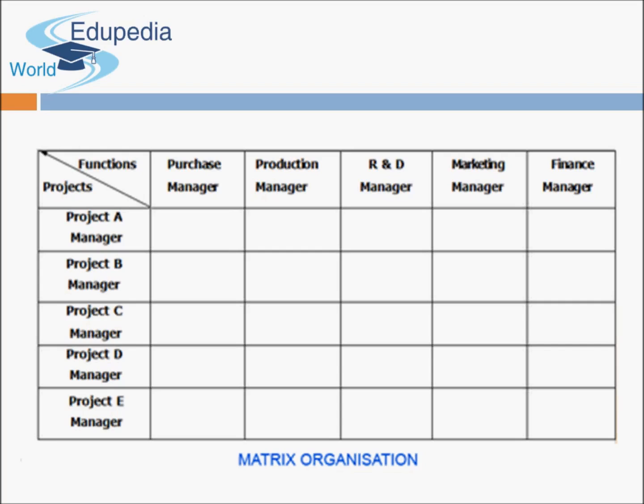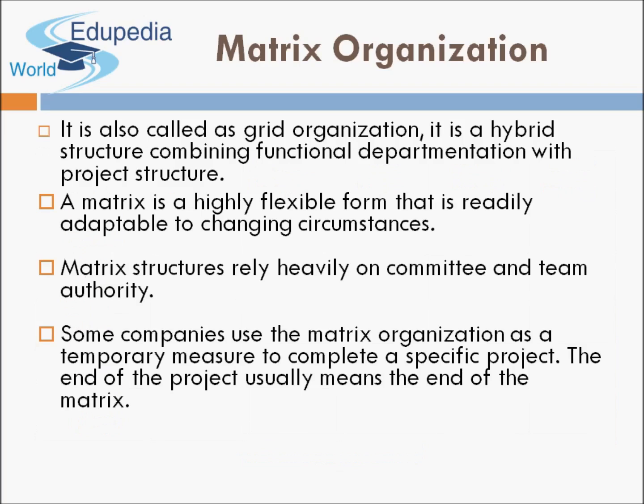These individuals from different departments working together under one project report to the project manager as well as to their respective functional heads. Once the project is completed, these people go back to their functional departments. It is called a matrix structure because a grid or matrix is formed where people report to both project and functional heads. Key points: it is also called a grid organization; it is a hybrid structure combining functional and project structures; it is highly flexible and adaptable to changing circumstances; matrix structures rely heavily on committee and team authority. Some companies use it as a temporary measure — when the project ends, the matrix ends.